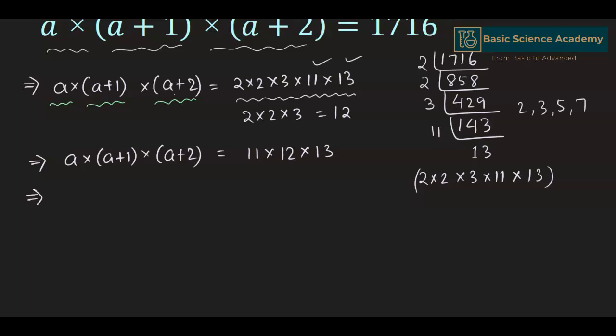So this gives us a × (a + 1) × (a + 2) = 11 × (11 + 1) × (11 + 2).